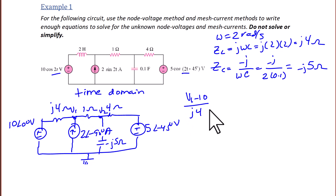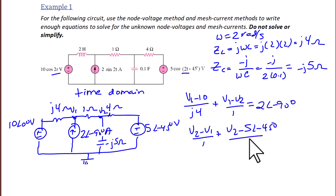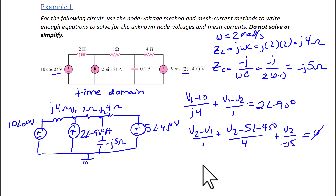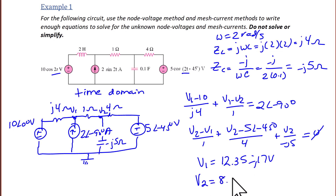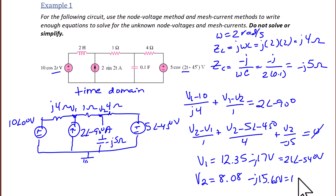Next we label nodes V1 and V2 and write KCL at V1 and V2. KCL at V1: (V1 − 10)/(j4) + (V1 − V2)/1 = 2∠−90°. KCL at V2: (V2 − V1)/1 + (V2 − 5∠−45°)/4 = V2/(−j5), set equal to 0. Solving in the calculator, V1 = 12.35 − j17 volts and V2 = 8.08 − j15.65 volts, or 21∠−54° and 17.61∠−63°.